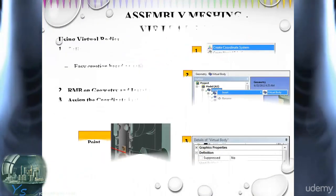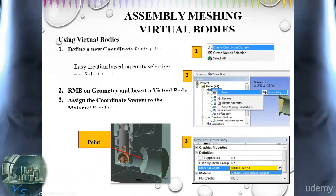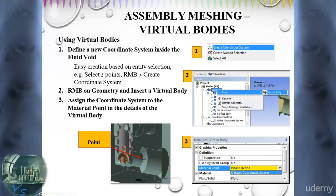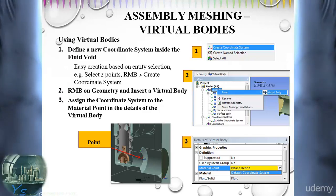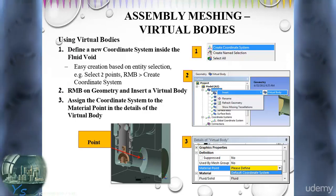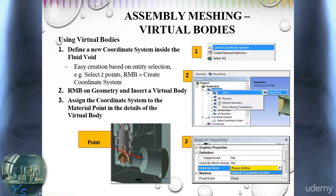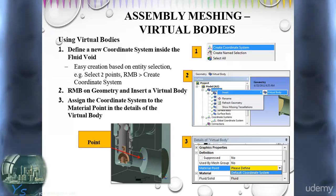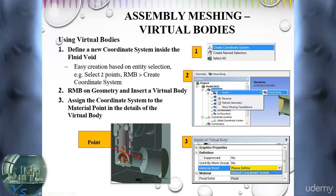Here we see the necessary steps in more detail. First, we create the coordinate system by right-clicking on the top coordinate system object in the outline. We can just select two points, one curved edge, or one wetted curved surface to be sure that the new coordinate system is valid.